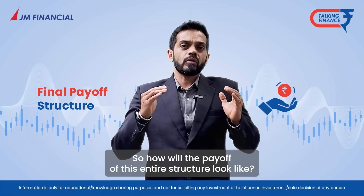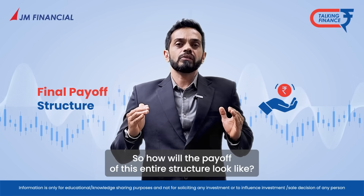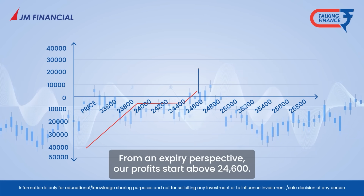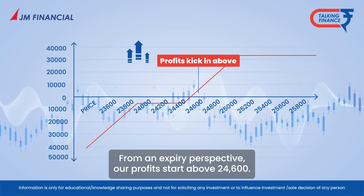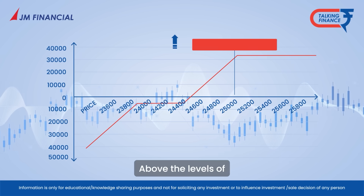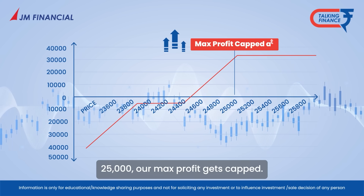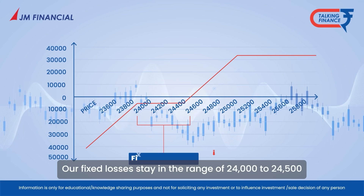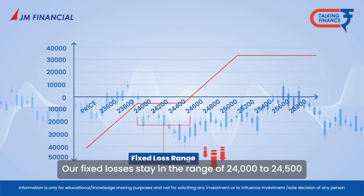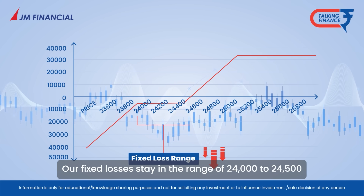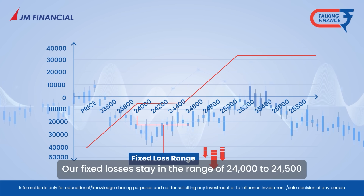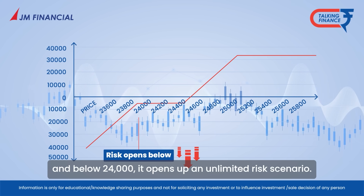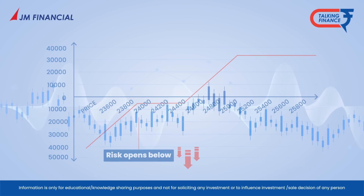How will the payoff of this entire structure look? From an expiry perspective, our profits start above 24,600. Above the level of 25,000, our max profit gets capped. Our fixed losses stay in the range of 24,000 to 24,500, and below 24,000, it opens up an unlimited risk scenario.